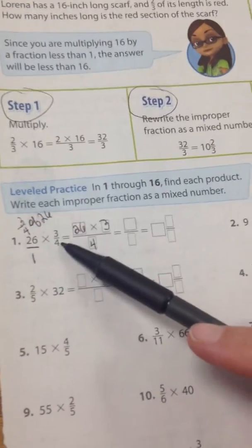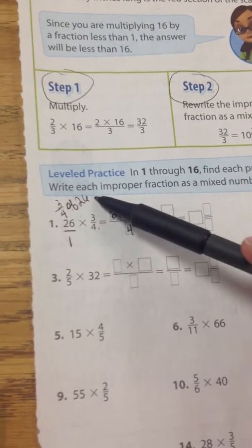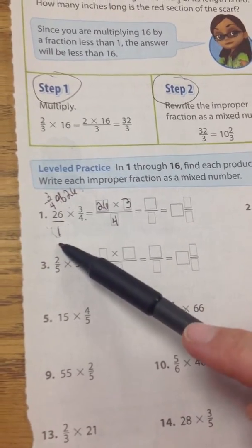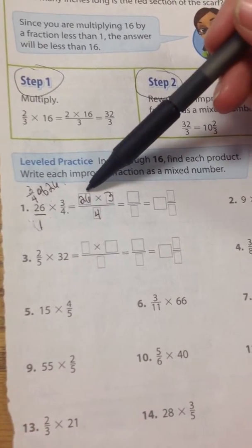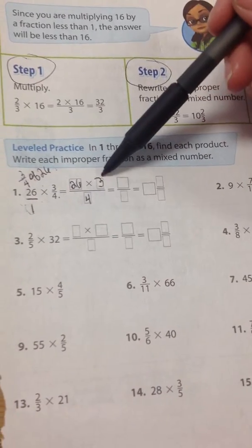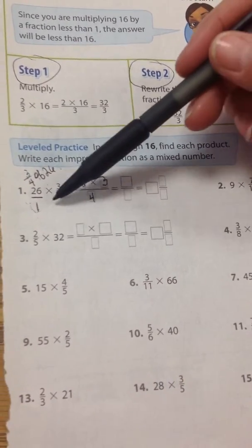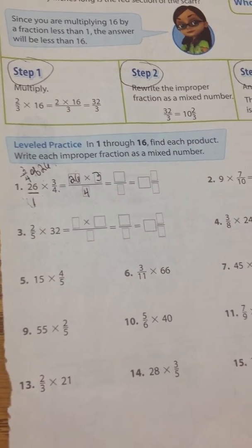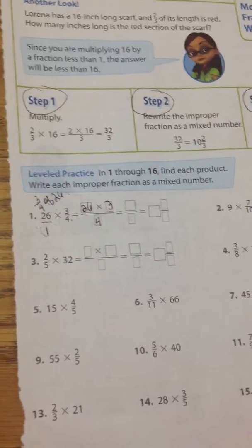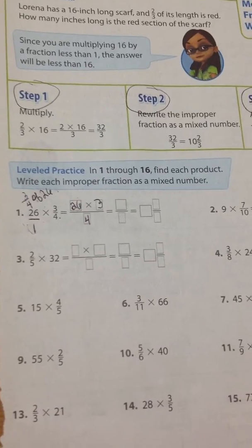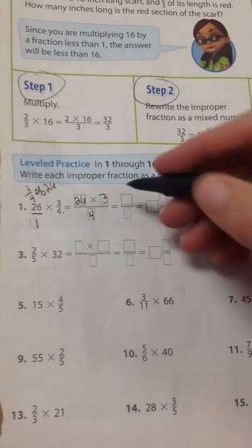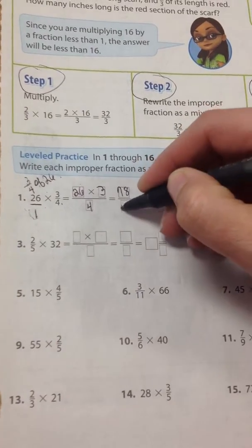26 times 3 fourths is the same thing as saying 3 fourths of 26. So you put the whole number over 1. So number 1 would be 26 times 3 all over 4, because 4 times 1 is 4. So you're going to need to do side math. I'm just going to use my trusty calculator over here. 26 times 3, and that is going to be 78 over 4.